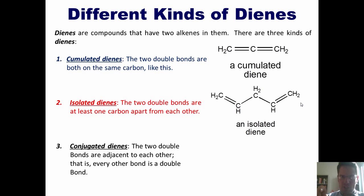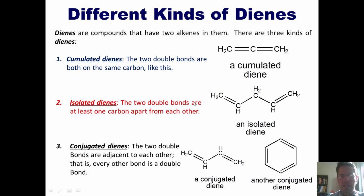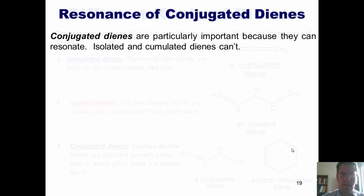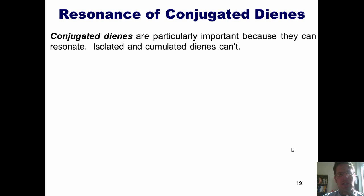The third type is very special: conjugated dienes. These are dienes in which the two double bonds are adjacent to each other — every other bond is a double bond, so it goes double, single, double, single. Here are some examples: a conjugated diene and benzene, the ring molecule that has every other bond going double, single, double, single. This is a very special conjugated diene we'll talk more about in chapters 15 and 16. The reason conjugated dienes matter is because they can resonate, whereas isolated and cumulated dienes cannot.